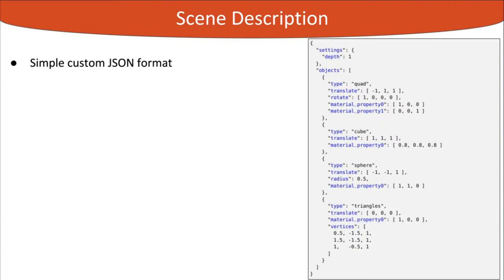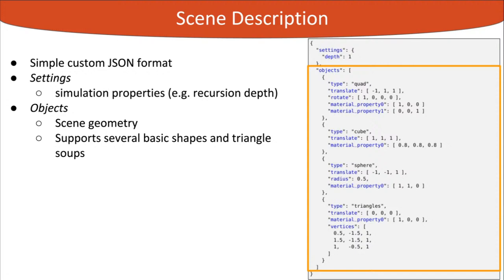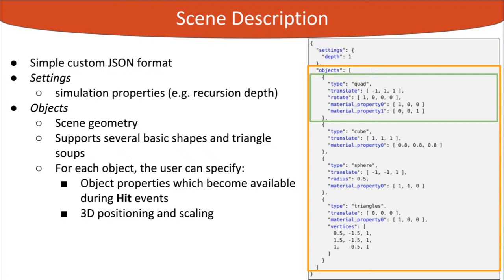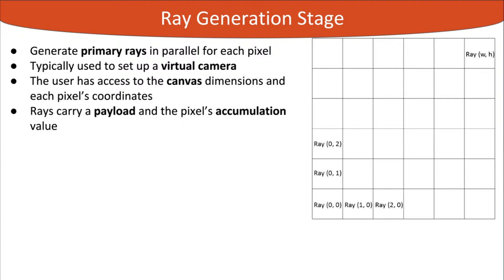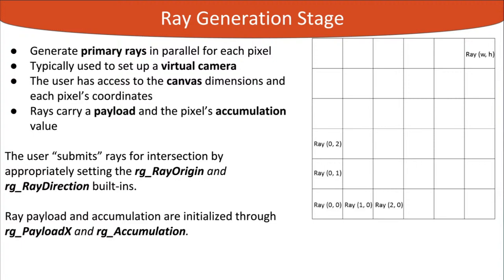The scene is described using a simple custom JSON format, with inputs for simulation settings and object geometry. The most common simulation setting is recursion depth. Objects are basic 3D shapes positioned using a transformation, rotation and scale triplet. Per-object material properties are also supported and become available at the hit stage. During ray generation, user code executes in parallel for each pixel — given pixel coordinates and canvas dimensions, one can generate rays from a virtual camera. Each ray carries a user-assignable payload and accumulation value.